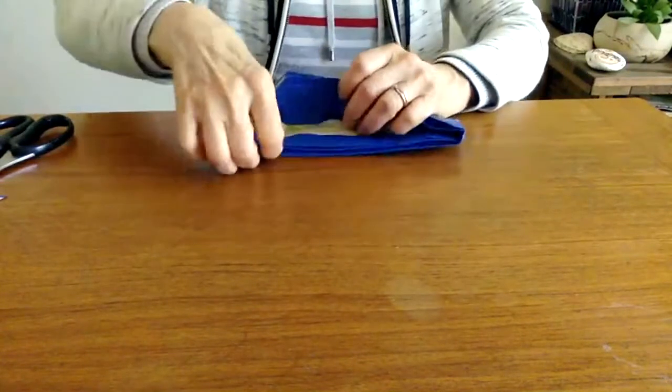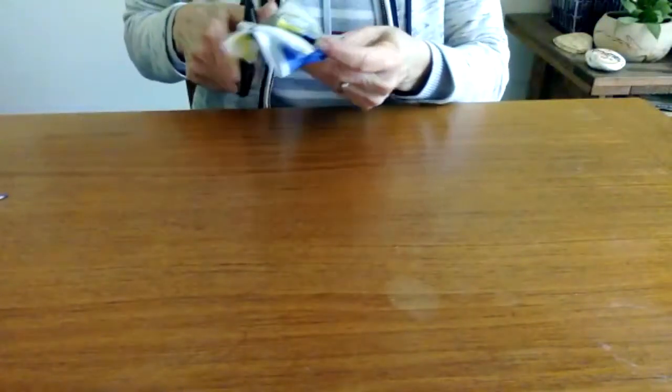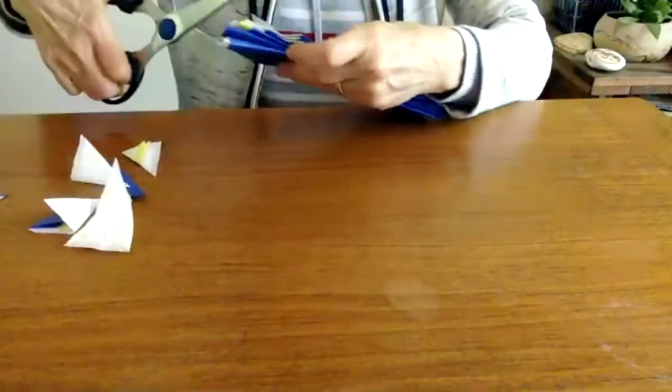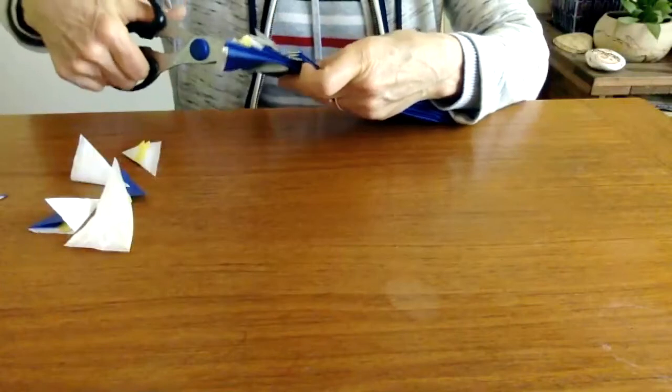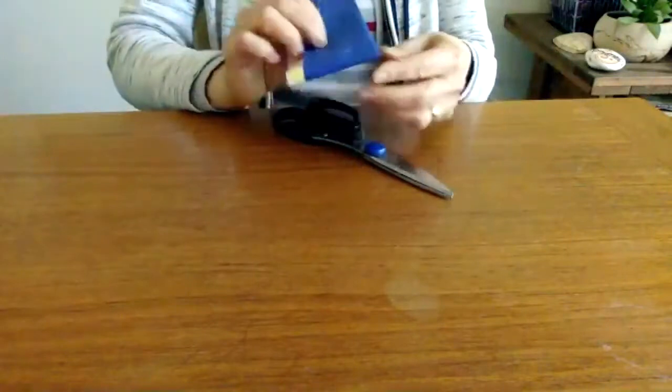And now I'm going to do it on the other side. And use the first side as a model. Cut it off. And if you want, an adult can help you cut off the end. I did not cut it on the folded side.